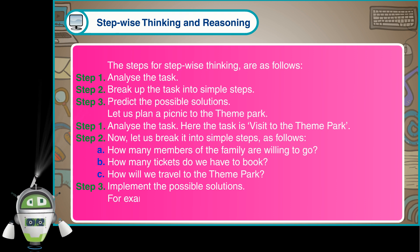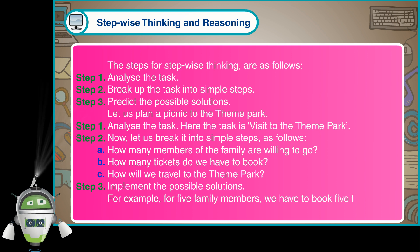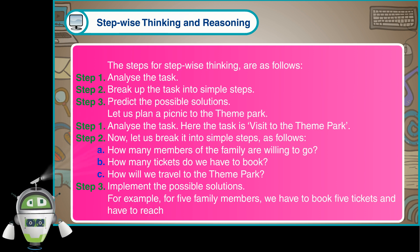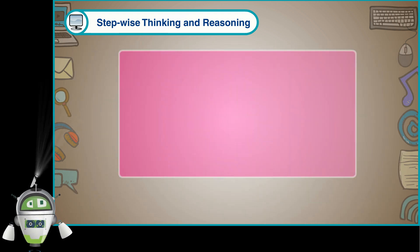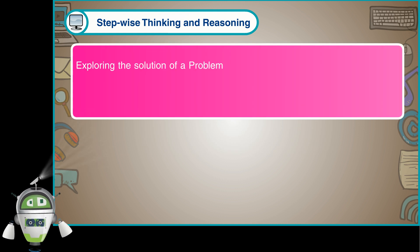For example, for 5 family members, we have to book 5 tickets and have to reach the theme park by car. Step 4: Exploring the solution of a problem.